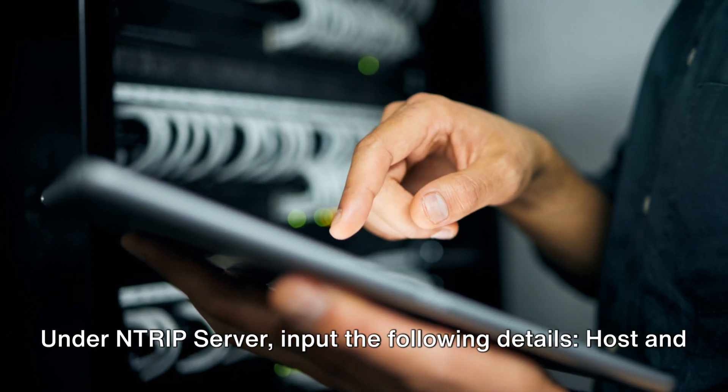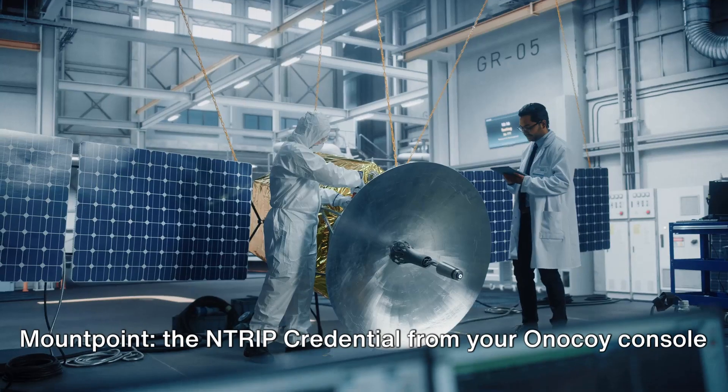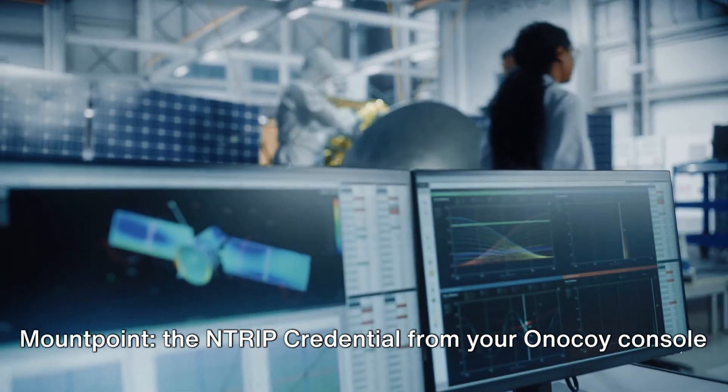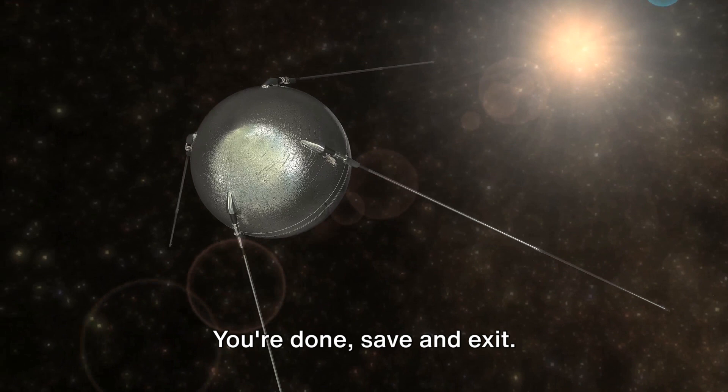Under Entrip Server, input the following details: Host and port servers.onokoi.com 2101 mount point, the Entrip credential from your Onokoi console, and your created password. You're done. Save and exit.